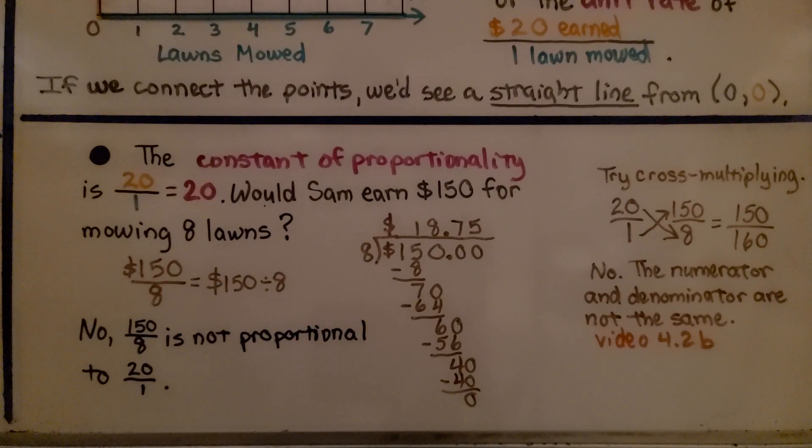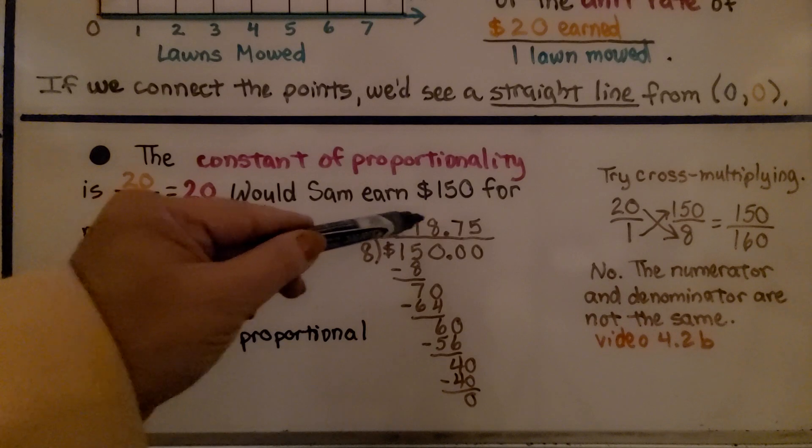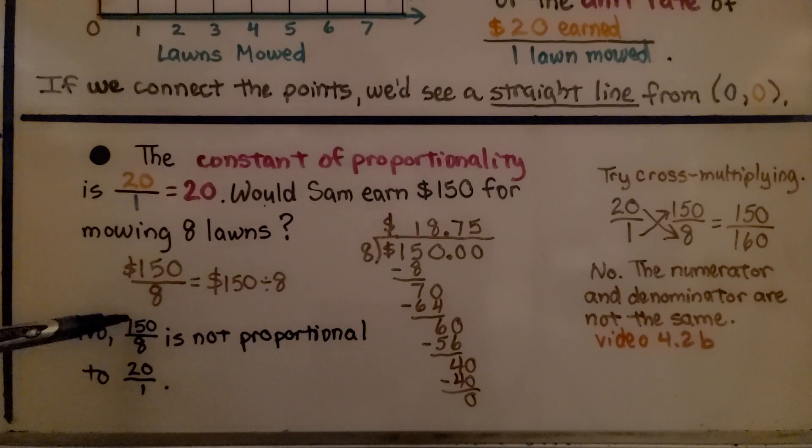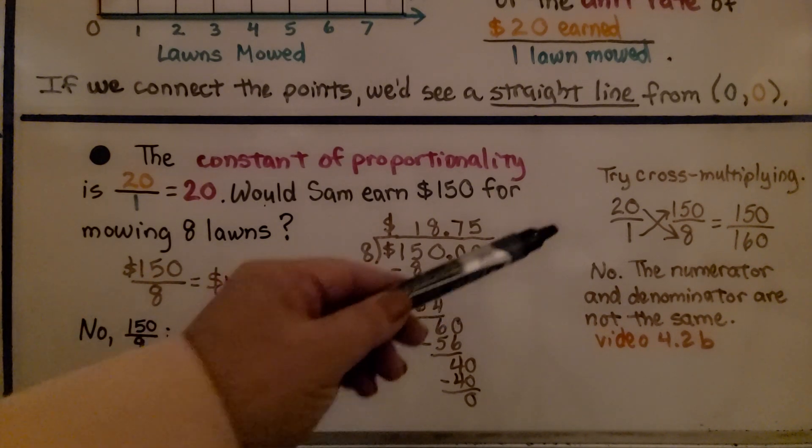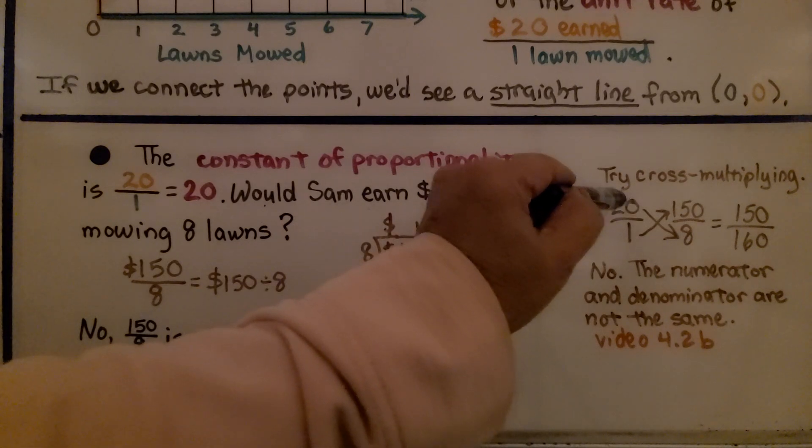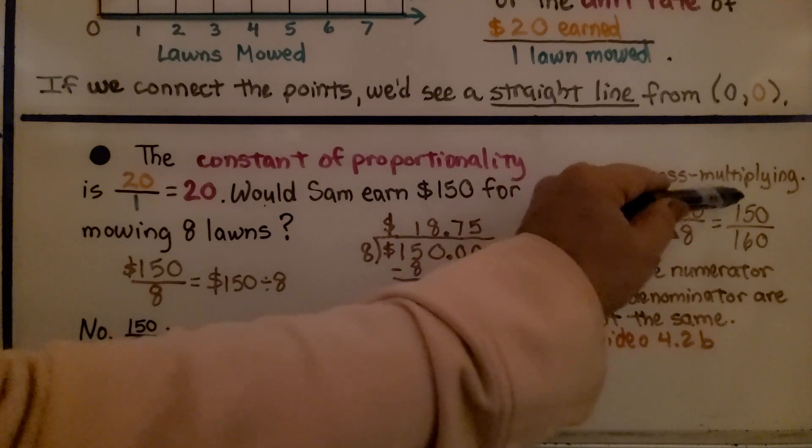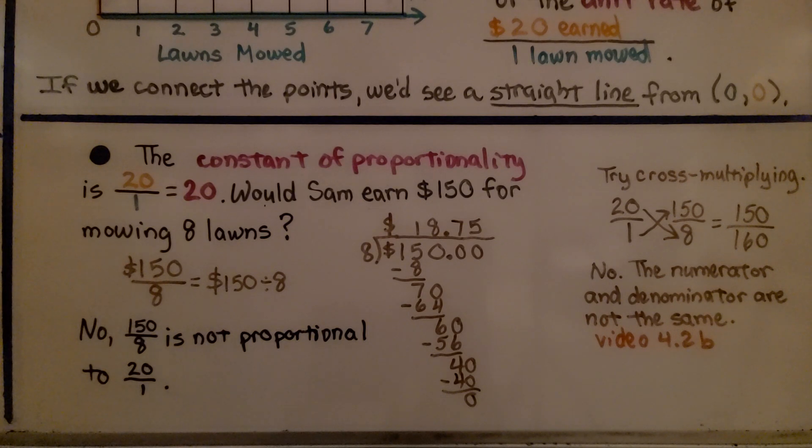The constant of proportionality is 20/1, which equals 20. Would Sam earn $150 for mowing 8 lawns? Well, $150 divided by 8 equals $18.75. So no, 150 divided by 8 is not proportional to 20 divided by 1. We can even try cross multiplying. We put 20/1 and 150/8, and cross multiply. 20 times 8 is 160, and 1 times 150 is 150. So no, the numerator and denominator are not the same.